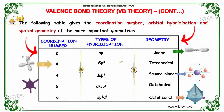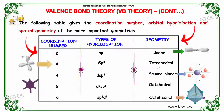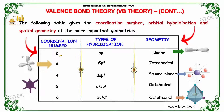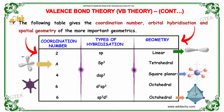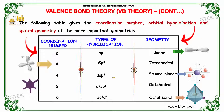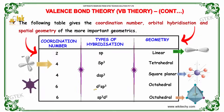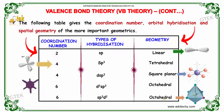Here is the coordination number with the types of hybridization and the geometrical model. If the coordination number is 2, it is sp and linear; 4 with sp3 is tetrahedral; 4 with dsp2 is square planar; 6 with d2sp3 is octahedral; and 6 with sp3d2 is also octahedral. This is the overall shape.